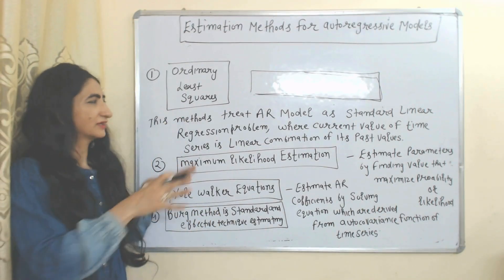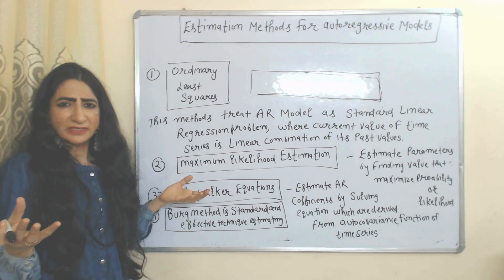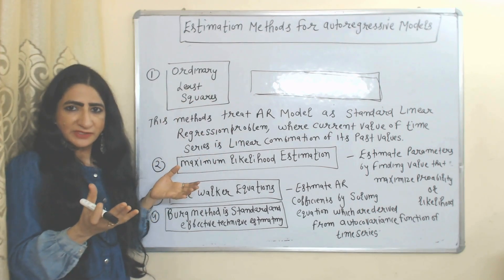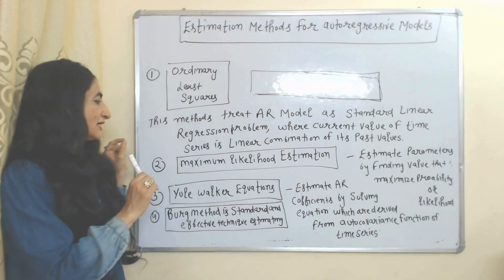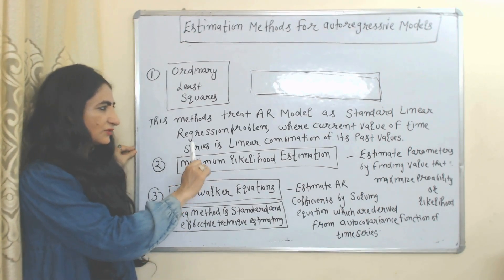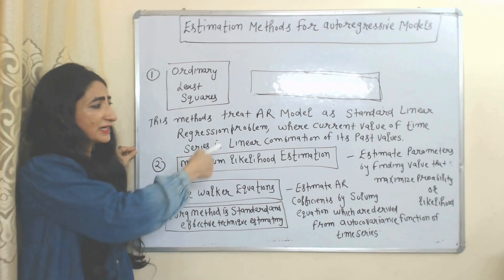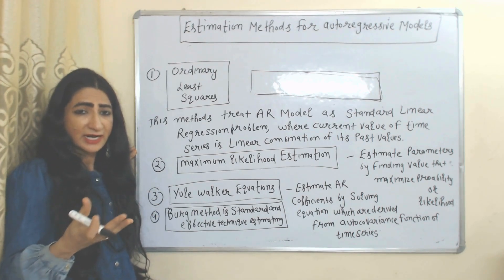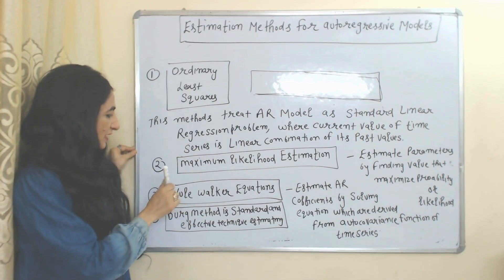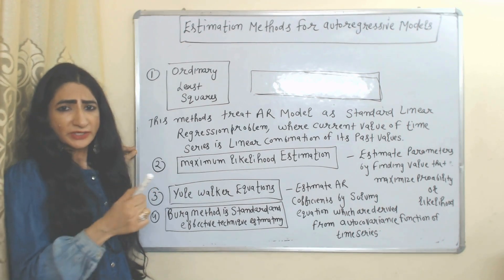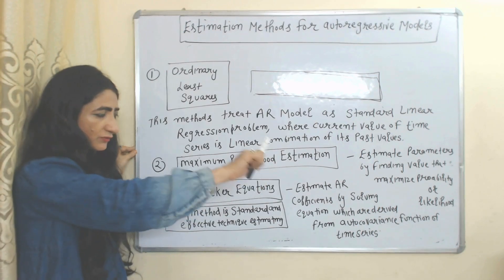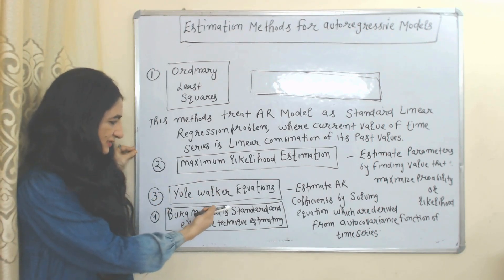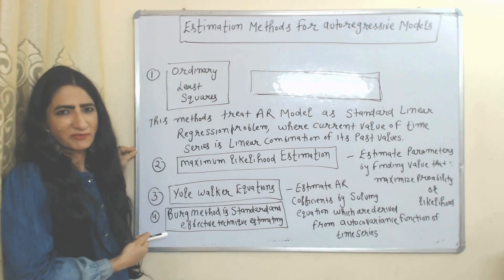Now we will see estimation methods for the autoregressive model. First is Ordinary Least Squares, which treats the autoregressive model as a standard linear regression problem where the current value is a linear combination of its past values. Second is Maximum Likelihood Estimation, which estimates parameters by finding values that maximize the likelihood. Next is the Yule-Walker equation, which estimates coefficients by solving equations derived from the autocovariance function of the time series. The Burg method is also a standard and effective estimation approach.